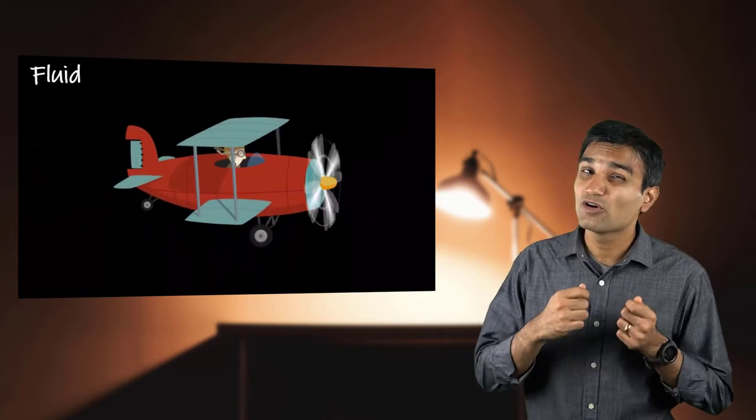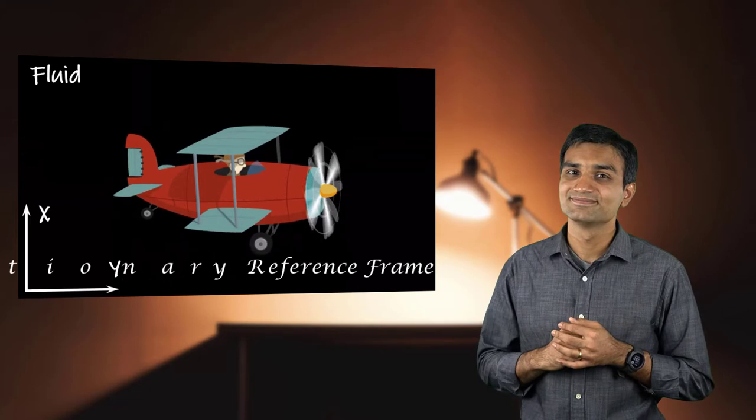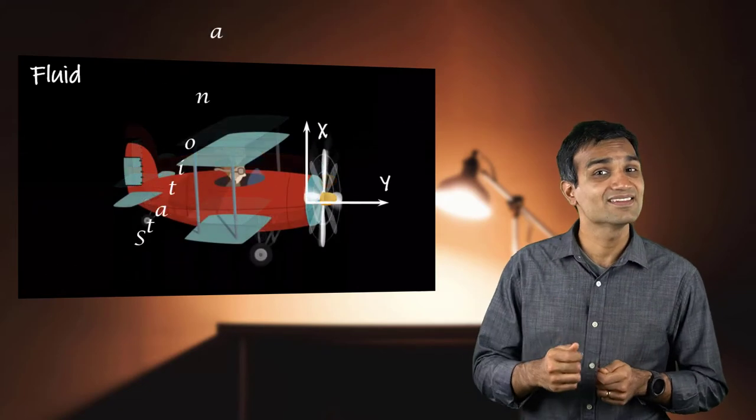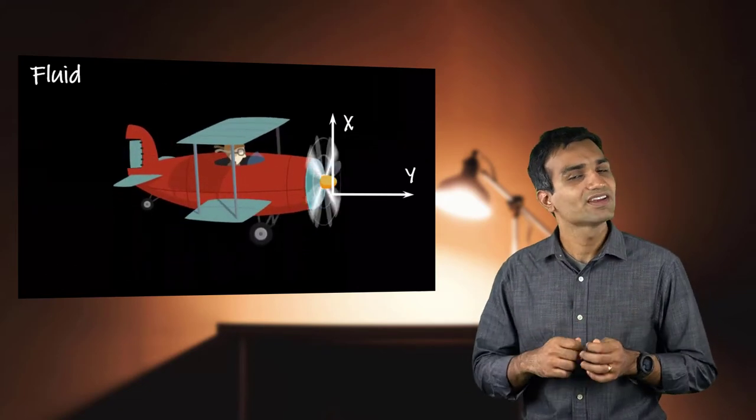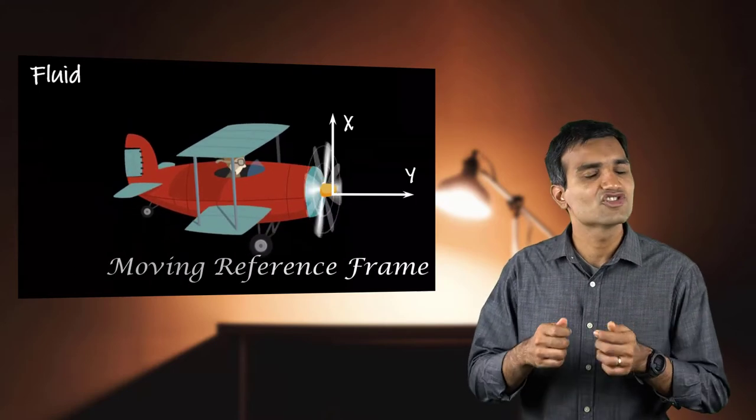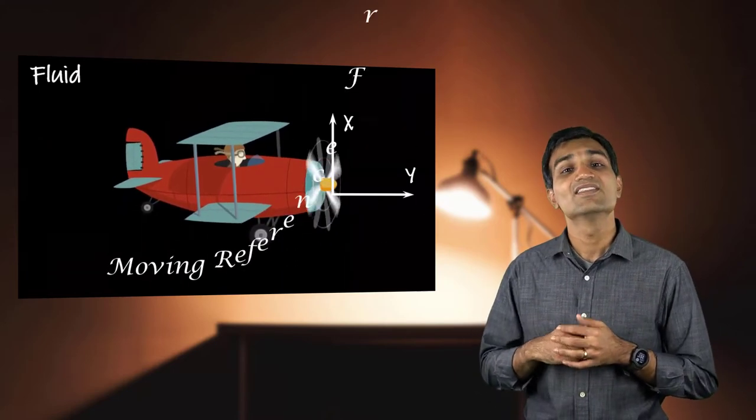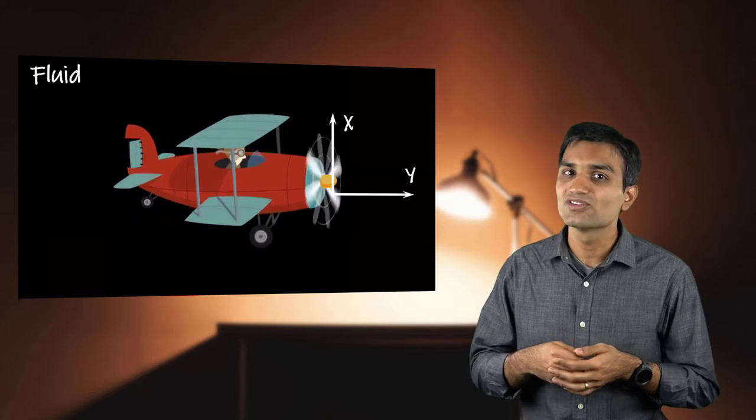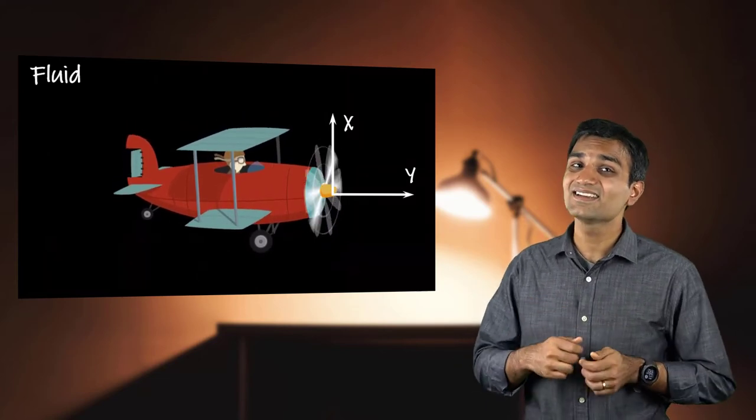In the second approach, we change the reference frame from stationary to that of a moving object. This type of analysis is typically called moving reference frame analysis, or MRF in short. The biggest advantage of this approach is that certain types of problems that are inherently transient in the stationary reference frame show steady behavior when the reference frame is changed to the moving object.